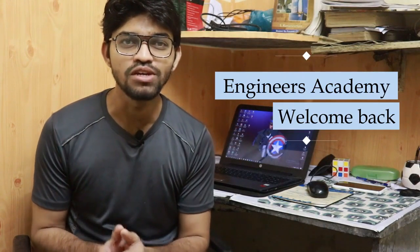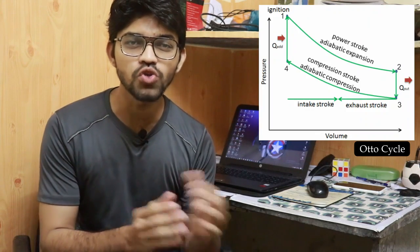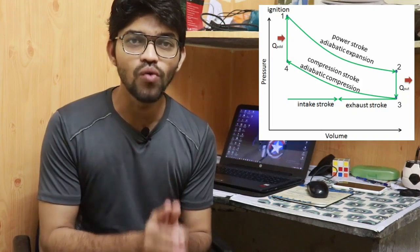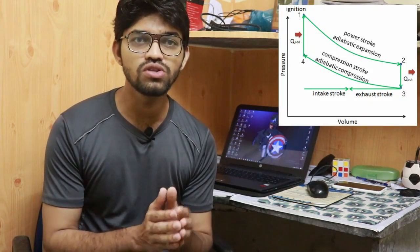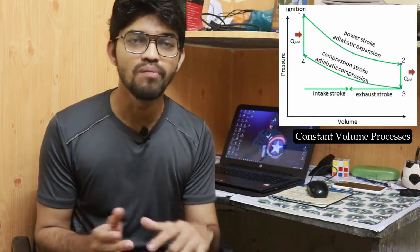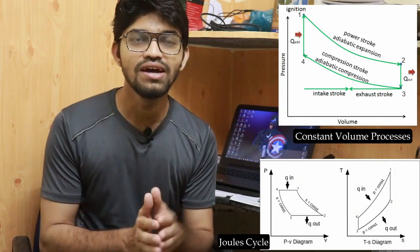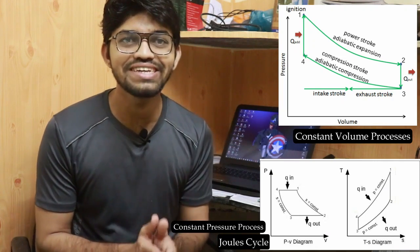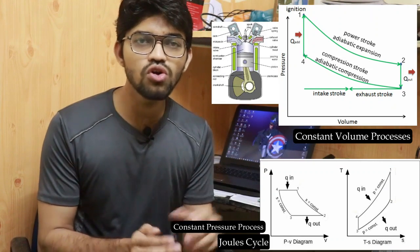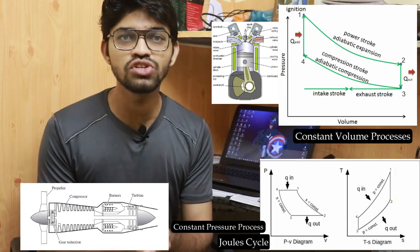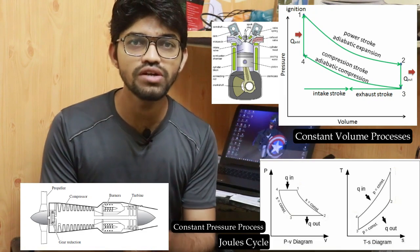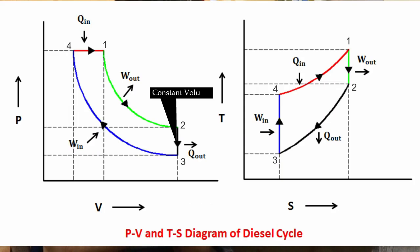Welcome back to Engineers Academy. In our previous video we saw the working of the Otto cycle used in petrol engines. In this video we are going to learn about the working of the diesel engine, which works on the diesel cycle. The Otto cycle works on constant volume processes, while the Joule, Ericsson, and Brayton cycles work on constant pressure processes. The diesel cycle is a combination of both constant volume and constant pressure processes.